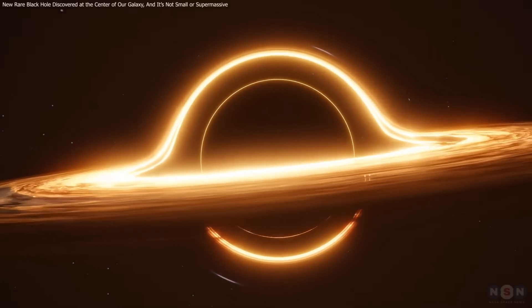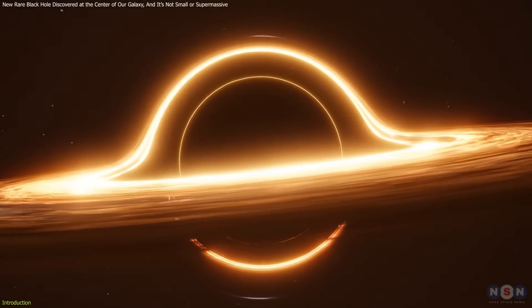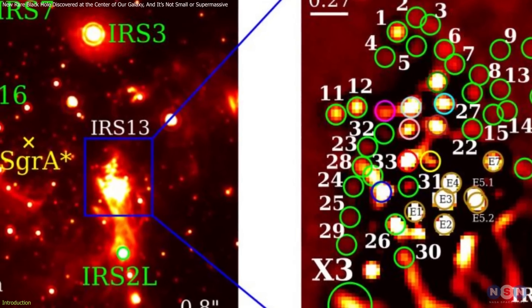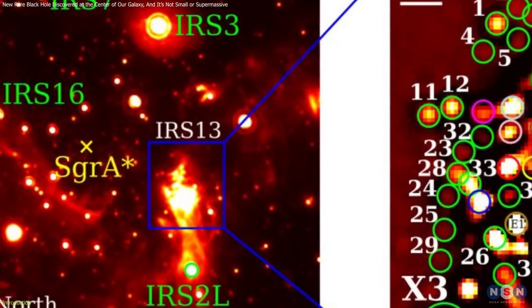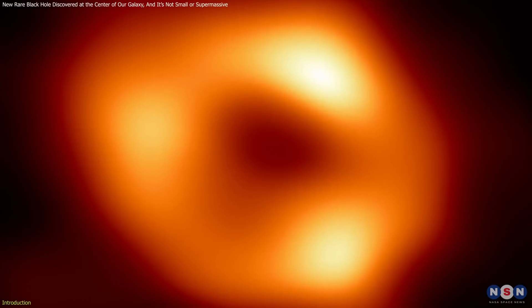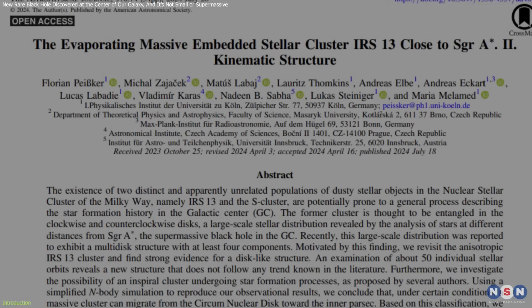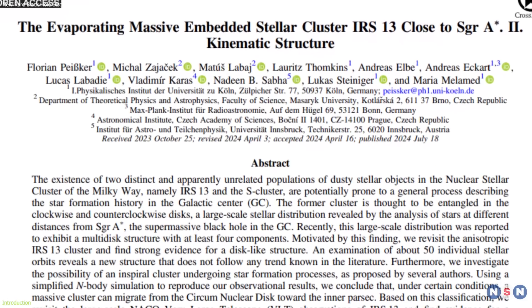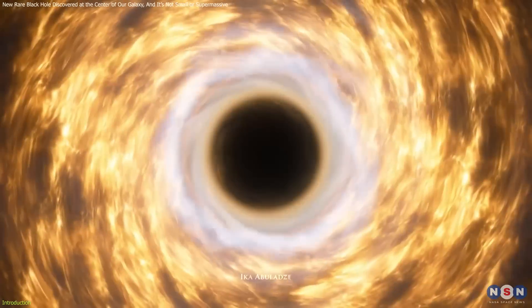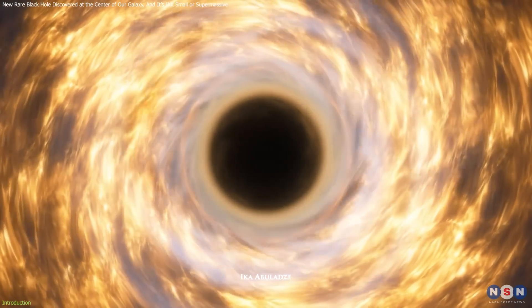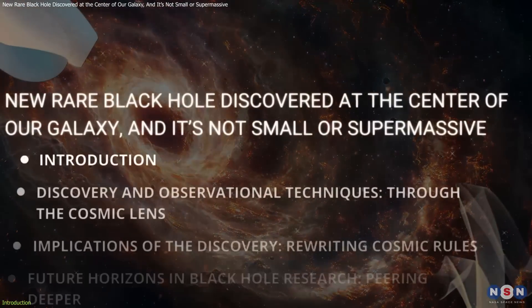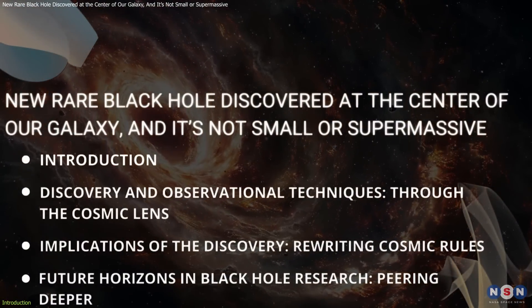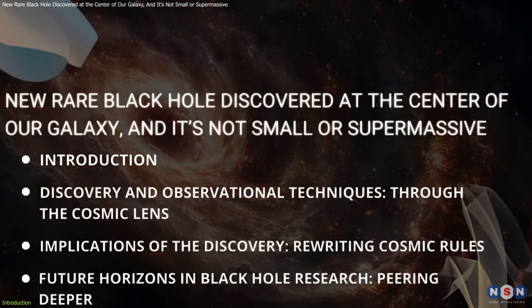We're exploring a groundbreaking discovery: an intermediate-mass black hole within the IRS-13 star cluster near the supermassive black hole Sagittarius A star. This revelation challenges our understanding of cosmic phenomena and reshapes our views on black hole evolution. This video will delve into what this finding signifies for science and how it's rewriting the cosmic rules.